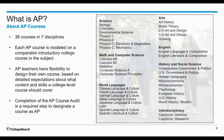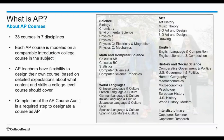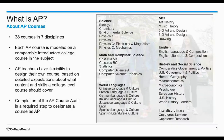AP courses provide you and your students with a wide variety of courses to choose from based on interest. Currently there are 38 AP courses in seven disciplines. Each of those 38 courses is modeled after a comparable introductory college course in that subject, with detailed expectations about the content and skills in each course. AP courses are designed to support you while also providing flexibility in how you ultimately design and implement your course.